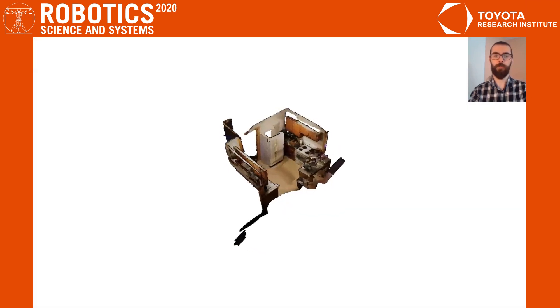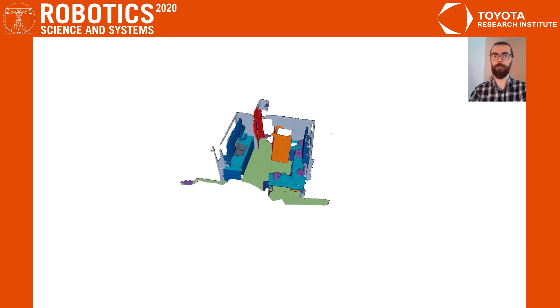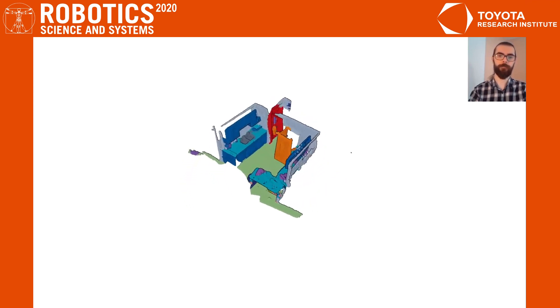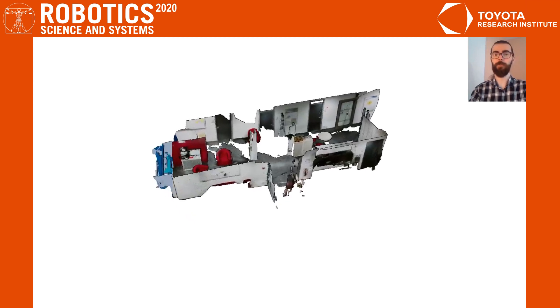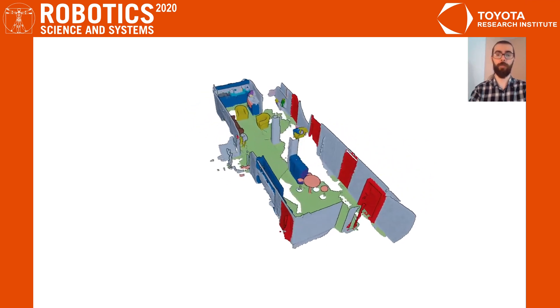Here we show results from the ScanNet dataset, where we segment large, room-sized point clouds into 20 classes. Additionally, we also use the network pre-trained on ScanNet to segment our own recorded data and we show that the network generalizes well to new settings.